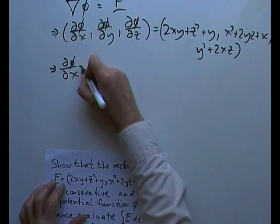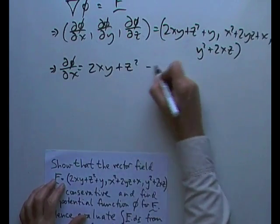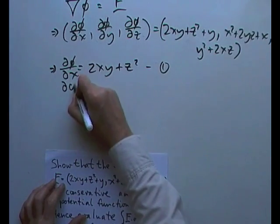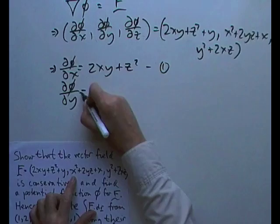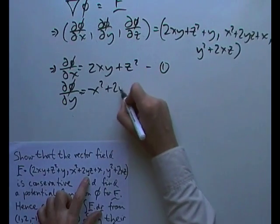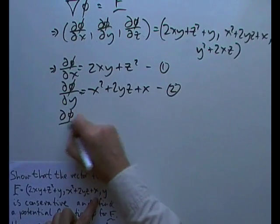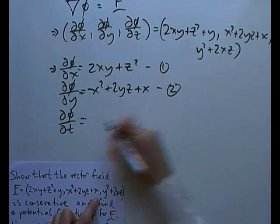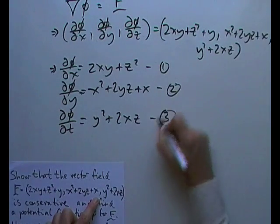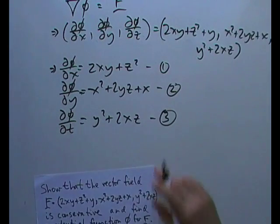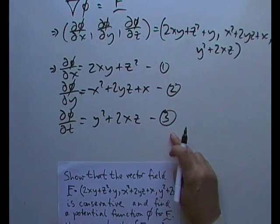Partial phi by partial x must equal 2xy plus z squared. Partial phi by partial y should equal x squared plus 2yz plus x, that's another equation. And partial phi by partial z should equal that last thing, y squared plus 2xz, call that three. I'll need to refer to that again, I'll need to rub out this space, so I'll just pause for a second.